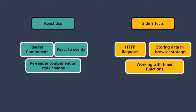We know that whenever the state inside a component changes, it re-evaluates that component, and all the logic in that component function is re-executed. But we might want to have some tasks inside a component function which should only be executed whenever something changes. These types of tasks we call side effects. And to work with side effects, we have a hook in React called useEffect.